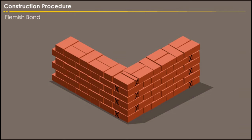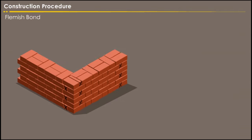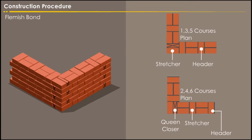In the Flemish bond, each course comprises of an alternate header and stretcher. The alternate courses start with a stretcher and a header.